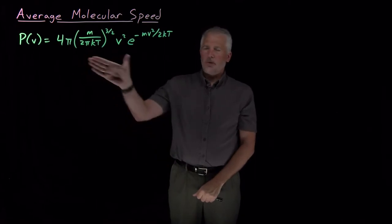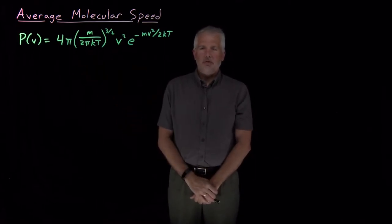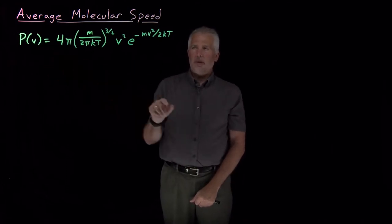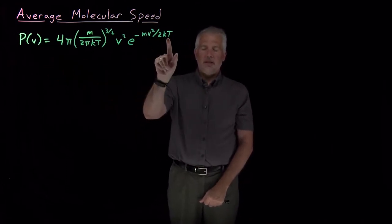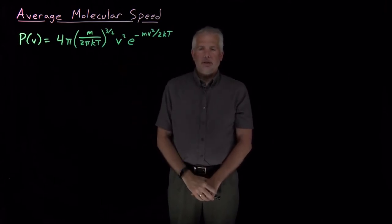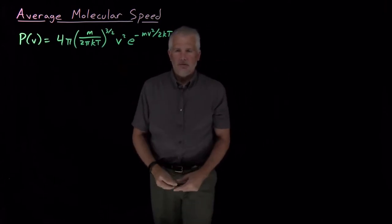All right. So we have the Maxwell-Boltzmann distribution of molecular speeds. It tells us the probability that a molecule has a certain speed for a molecule of a particular mass at a particular temperature.